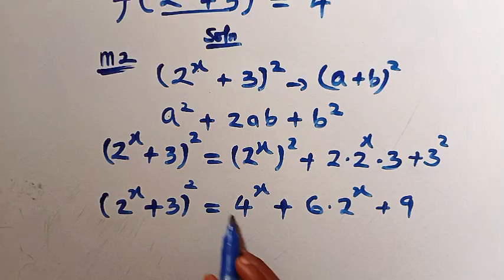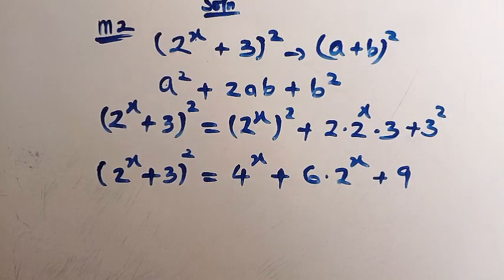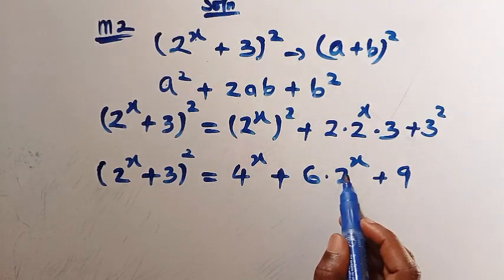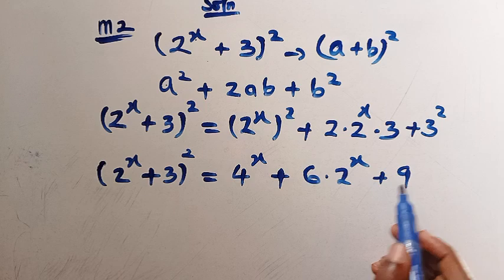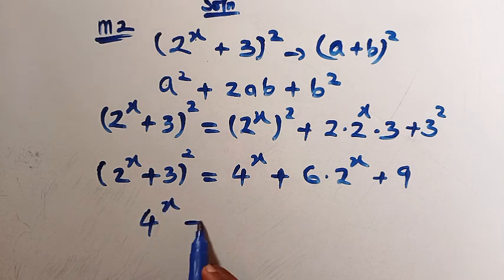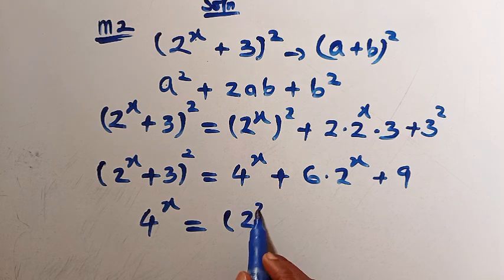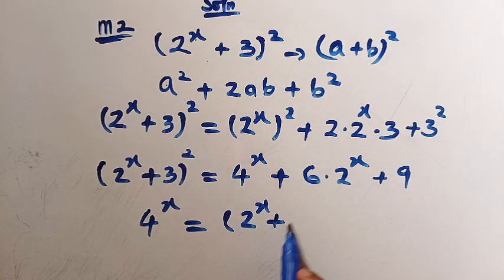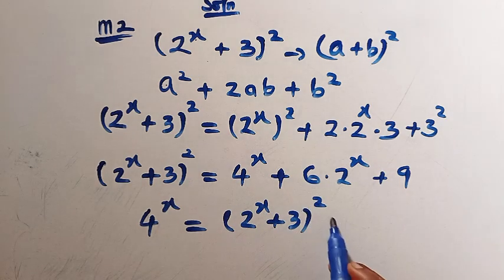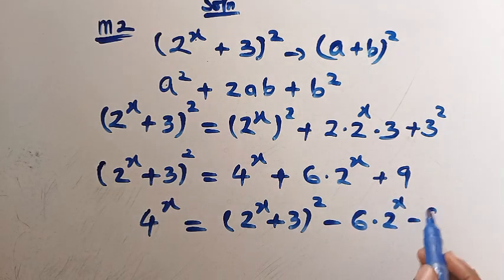Now let's make 4^x the subject of the formula. We move 6·2^x + 9 to the other side and write: 4^x = (2^x + 3)² − 6·2^x − 9.